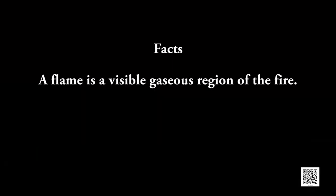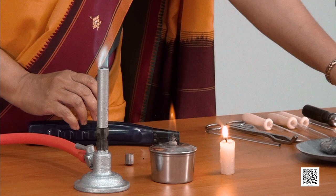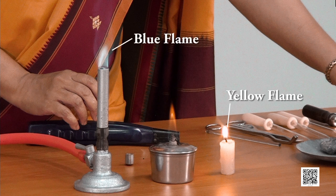Now let us look at some facts about the flame. A flame is a visible gaseous region of the fire. A substance which vaporizes during burning gives a flame. Observe the color of a candle flame and a flame of a Bunsen burner — we can see a candle burns with a yellow flame and a Bunsen burner burns with a blue flame.